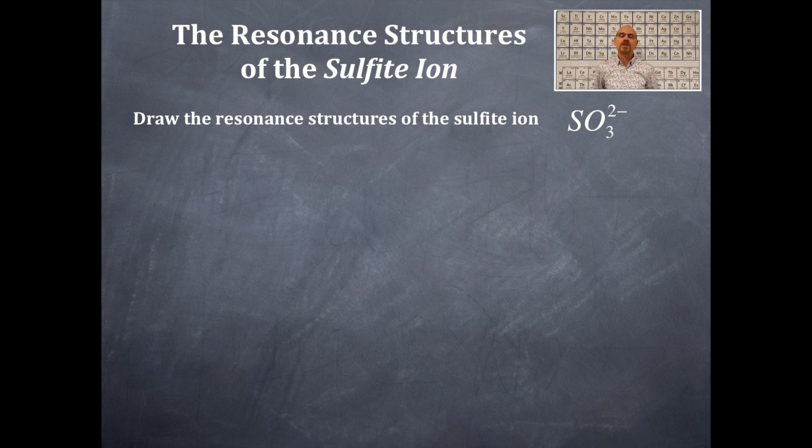You're going to do the Lewis dot structure for the sulfite ion. Don't forget to add up the valence electrons for oxygen, for sulfur, plus 2 for the 2 minus charge.